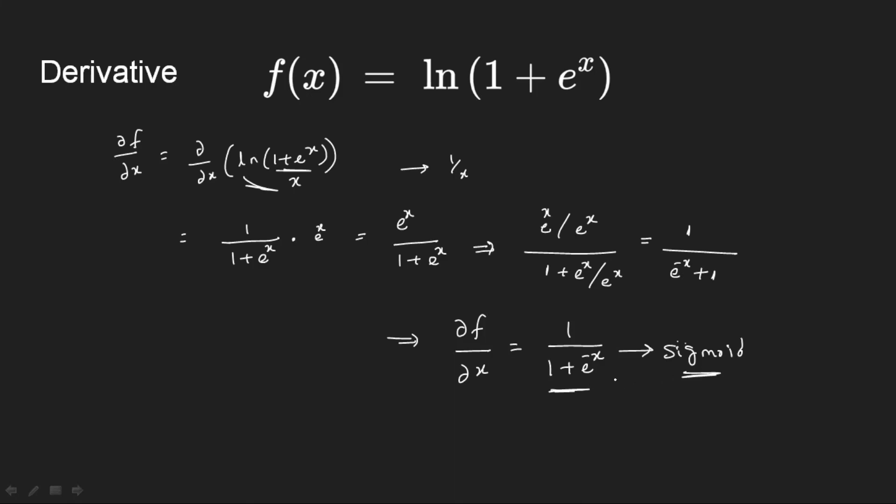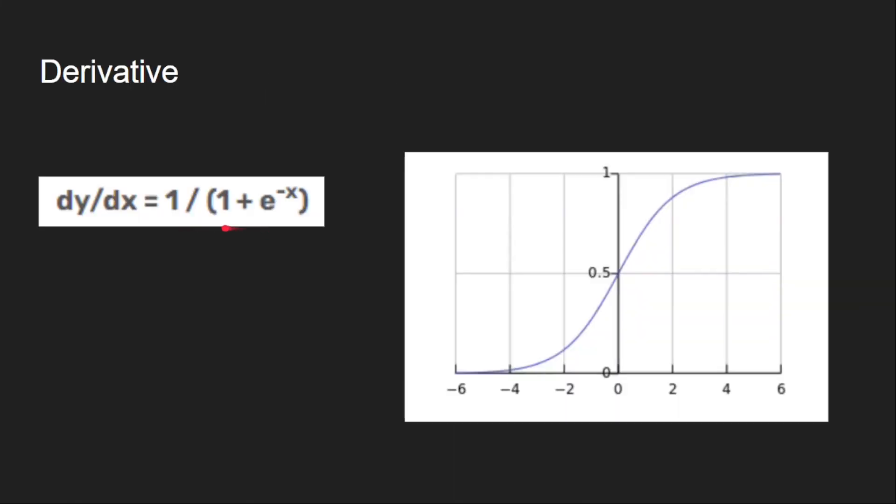This is how the derivative looks like. The derivative is 1/(1 + e^(-x)), which is the sigmoid function. The graph looks like this. The derivatives are always ranging between 0 and 1.